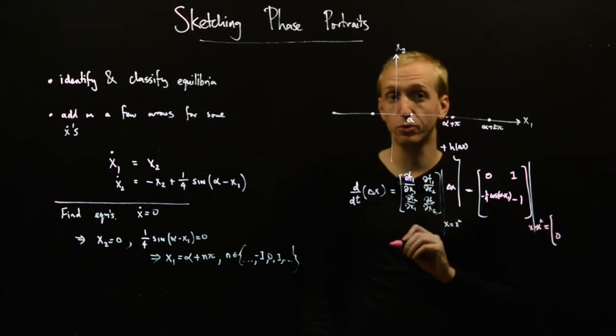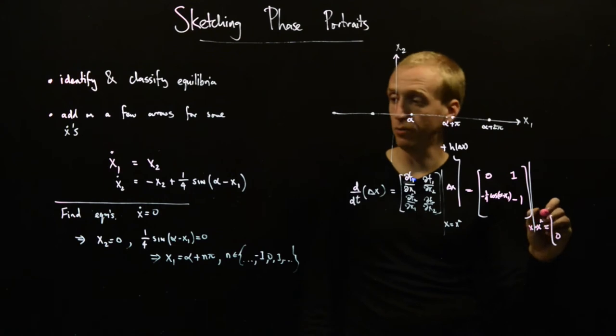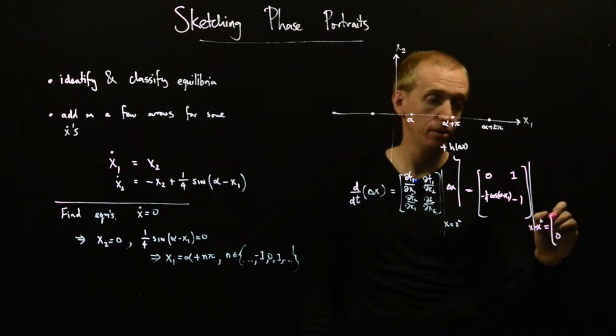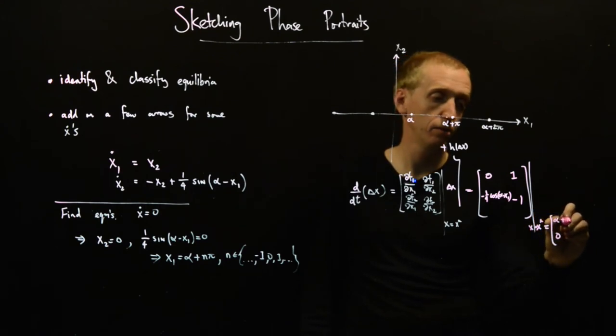So we want to set x equal to x star and x star. Well, our x2 is equal to zero at all our equilibrium points, and otherwise we have alpha plus n pi.